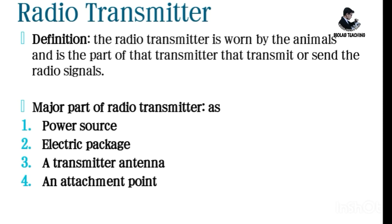The radio transmitter is worn by the animal and it is the part that transmits or sends the radio signal. A transmitter consists of the following parts: first, a power source which is a rechargeable battery cell or solar cells that give energy to the transmitter; second, an electronic package consisting of a circuit board and crystal oscillators; and third, a transmission antenna that sends transmissions to the main radio antenna.